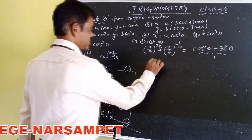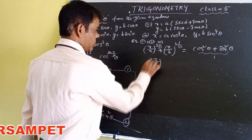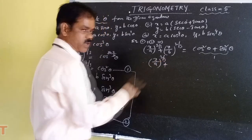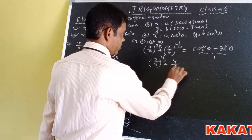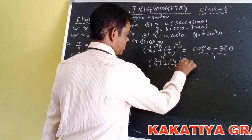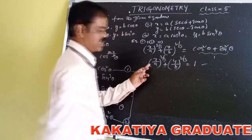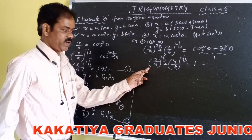So our required answer is (x/a)^(2/3) + (y/b)^(2/3) = 1. Here, theta is eliminated.